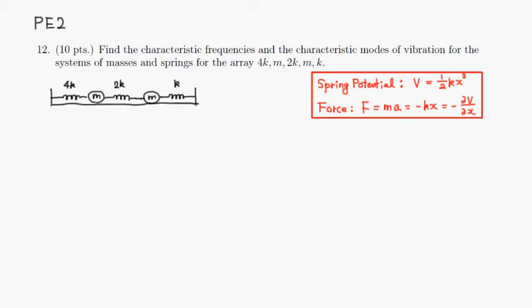Let's look at practice exam 2, problem number 12. We are looking for the characteristic frequency and the modes of vibration for the system below — springs 4k, 2k, k with two masses of mass m on each.